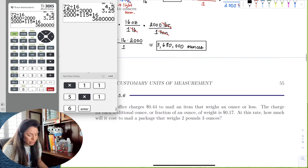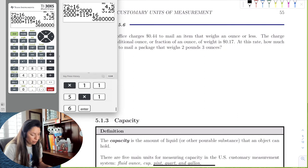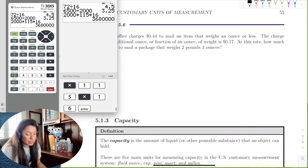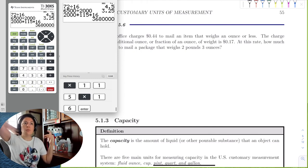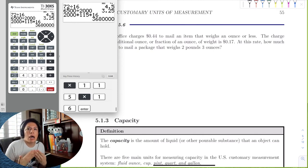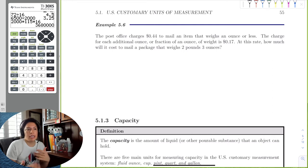So let's try an application. Now we're going to go to the post office and it charges 44 cents to mail an item that weighs an ounce or less. The charge for each additional ounce or fraction of an ounce is 17 cents. At this rate, how much will it cost to mail a package that weighs two pounds, three ounces? So this one is always challenging for students, and the reason why is because we need to be able to understand how we mail things. It's nice because the first ounce, no matter what, is 44 cents. So even if it's half an ounce or a quarter of an ounce, it's still going to cost you 44 cents.